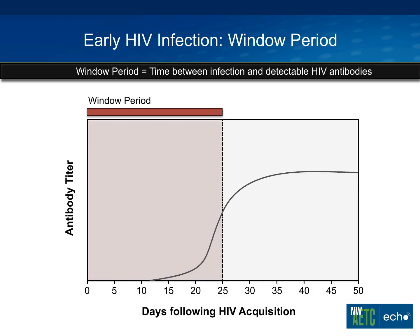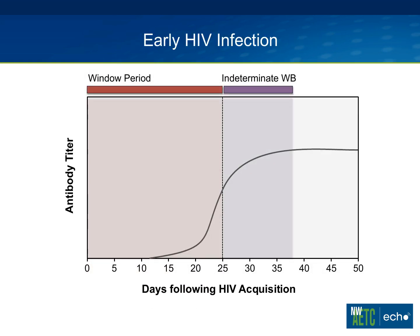To underscore the problem with traditional testing: when you do an enzyme immunoassay test, it typically takes about 20 to 30 days — on average about 25 days — before the antibody test is positive. This period from the time of infection until you actually have detectable antibodies is referred to as the window period. With the Western blot, the time period is even longer — it can take out to 35 or even 40 days before the Western blot starts turning positive.